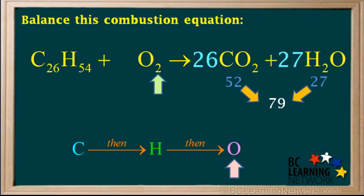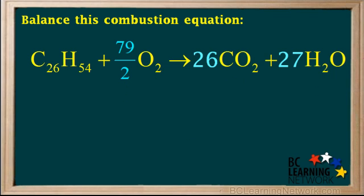Since there is a 2 in the O2, we write a coefficient 79 over 2 in front of the O2. Because 2 times 79 over 2 is equal to 79. So now we have 79 oxygens on both sides. So the equation is now balanced.